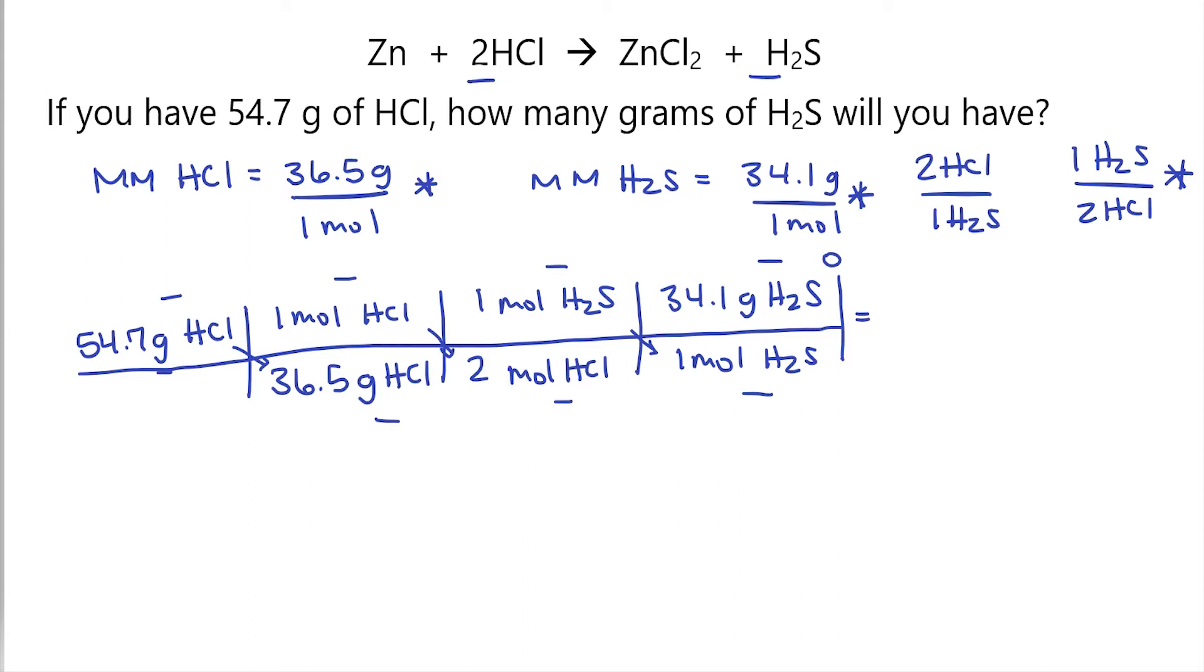So let's go ahead and multiply things together and get them into the right place. So 54.7 times 1 times 1 times 34.1 is 1,865. Now this is going to be grams of HCl times mole of HCl times mole of H2S times grams of H2S. Now all of this is going to be over our bottom, which is 36.5 times 2 times 1, which is 73. Now this is grams of HCl times mole of HCl times mole of H2S.